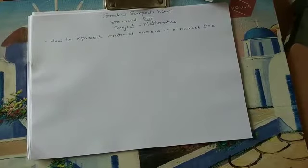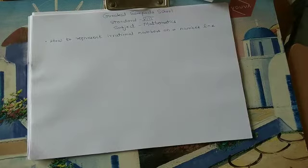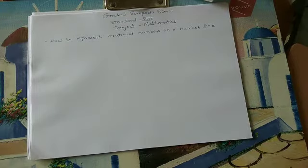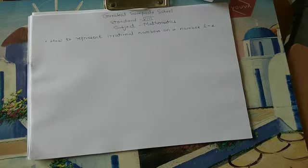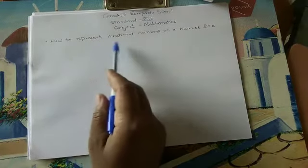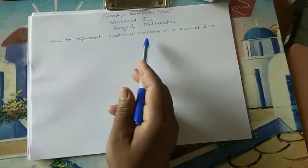We already studied what is meant by irrational numbers. Irrational numbers are all the real numbers which cannot be written in the form of a ratio of two integers. We know that rational numbers can be written in the form of numerator upon denominator, that is a ratio of two integers, but irrational numbers cannot. Now we will study how to represent these irrational numbers on a number line.